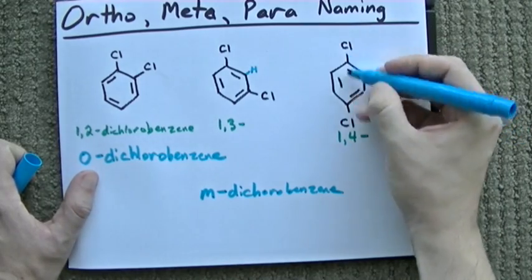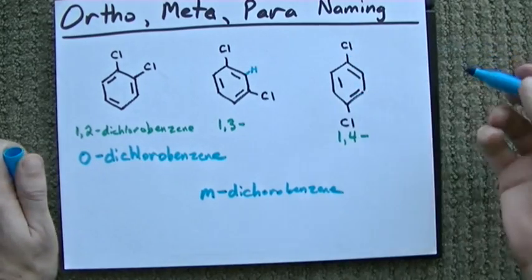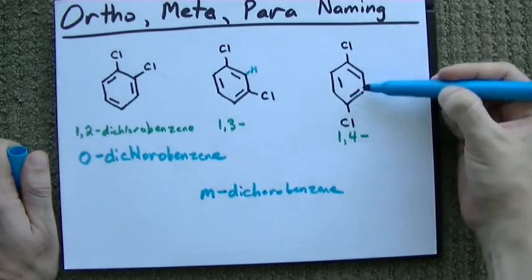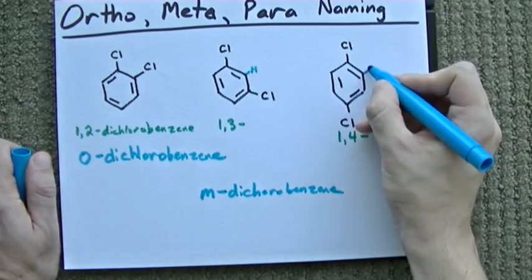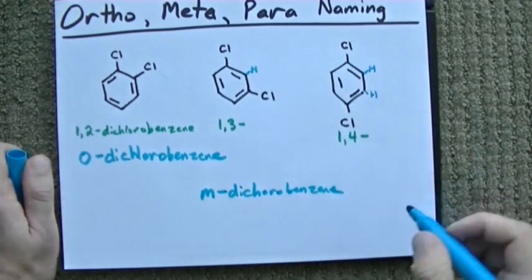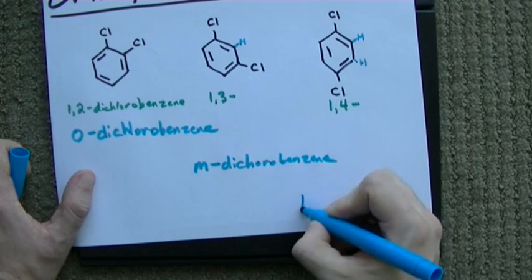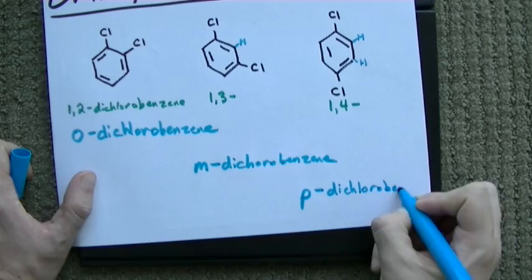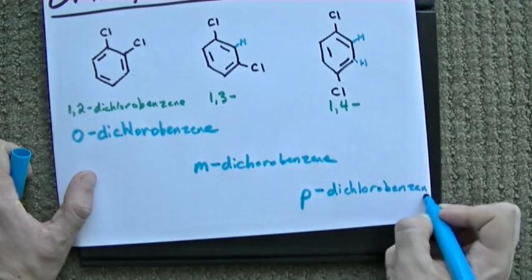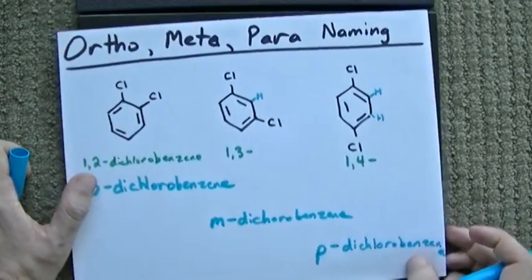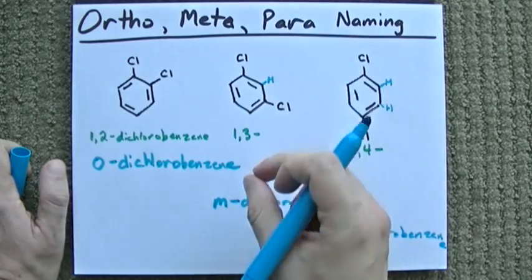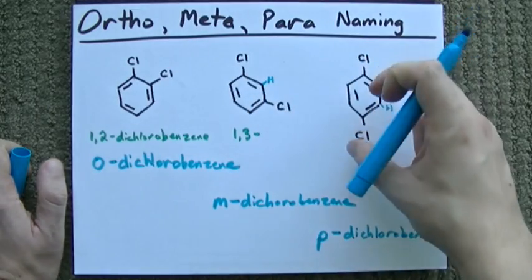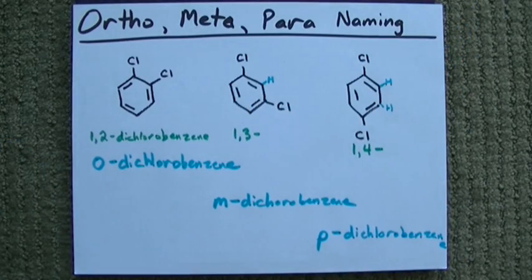If they're directly across from each other on the molecule - separated by two other carbons - we call that para. This is p-dichlorobenzene. So we've got ortho if they're right beside each other, meta if they're separated by one, and para if they're right across from each other.